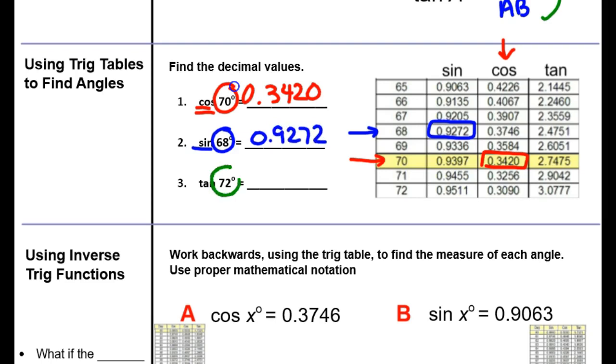And the last one we have here is 72 degrees. We're going to go into the tangent column. 3.0777. If you look on your whole chart, the one thing you notice is that 90 degrees is never going to be used. We only use the acute angles from our triangle.